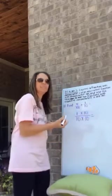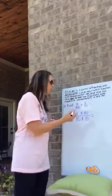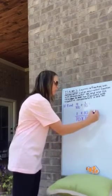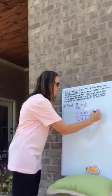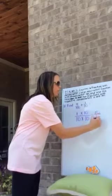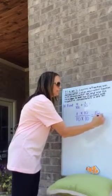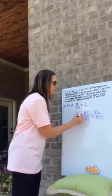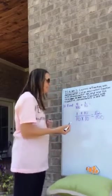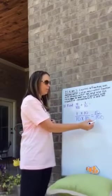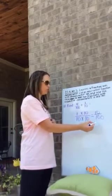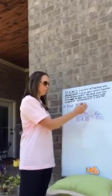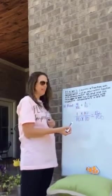Ten tenths equals one whole, and that will give you ten hundredths. Ten times ten is one hundred, one times ten is ten, and now we have an equivalent fraction for one tenth.